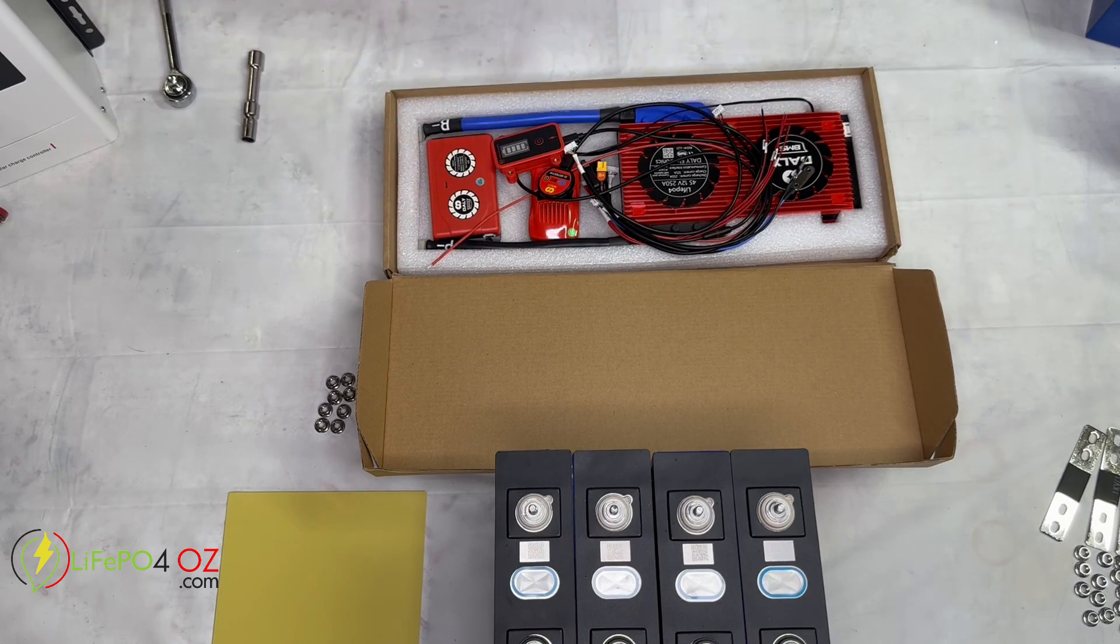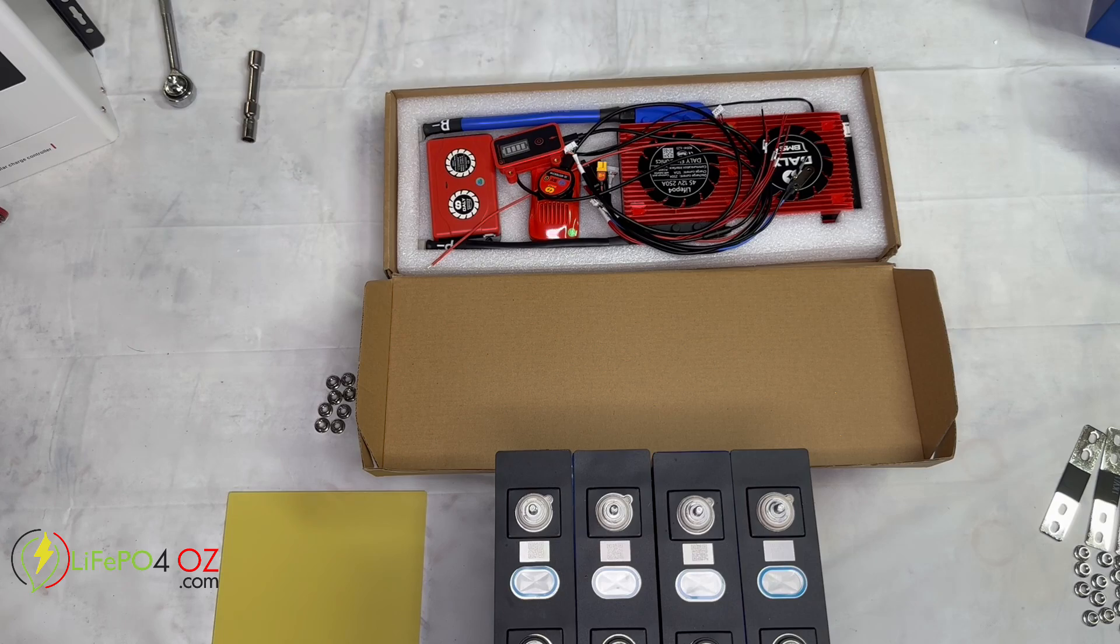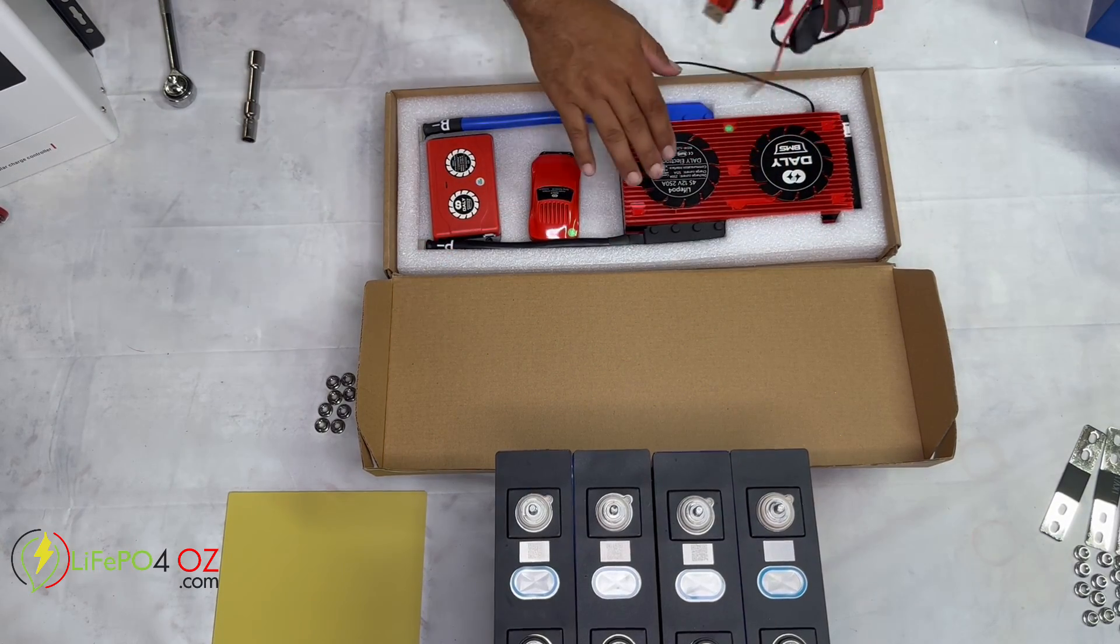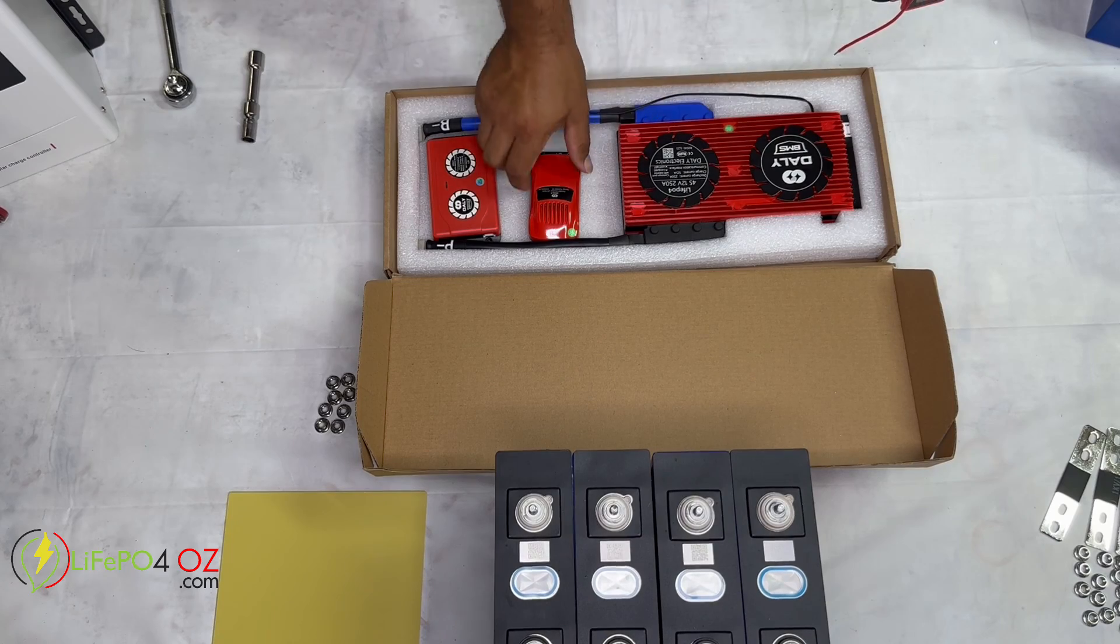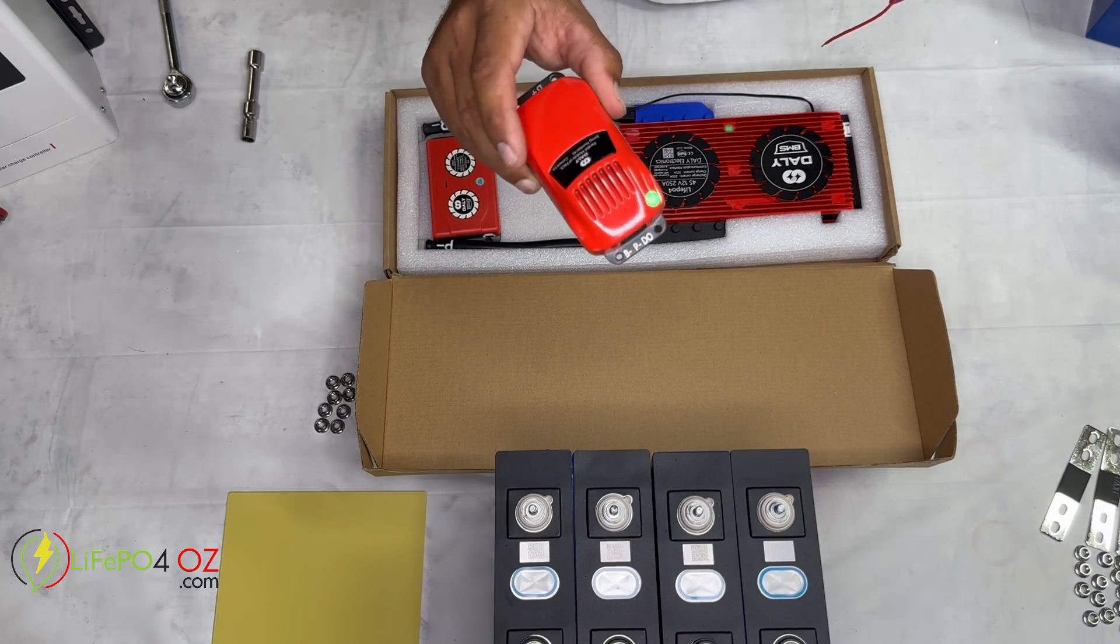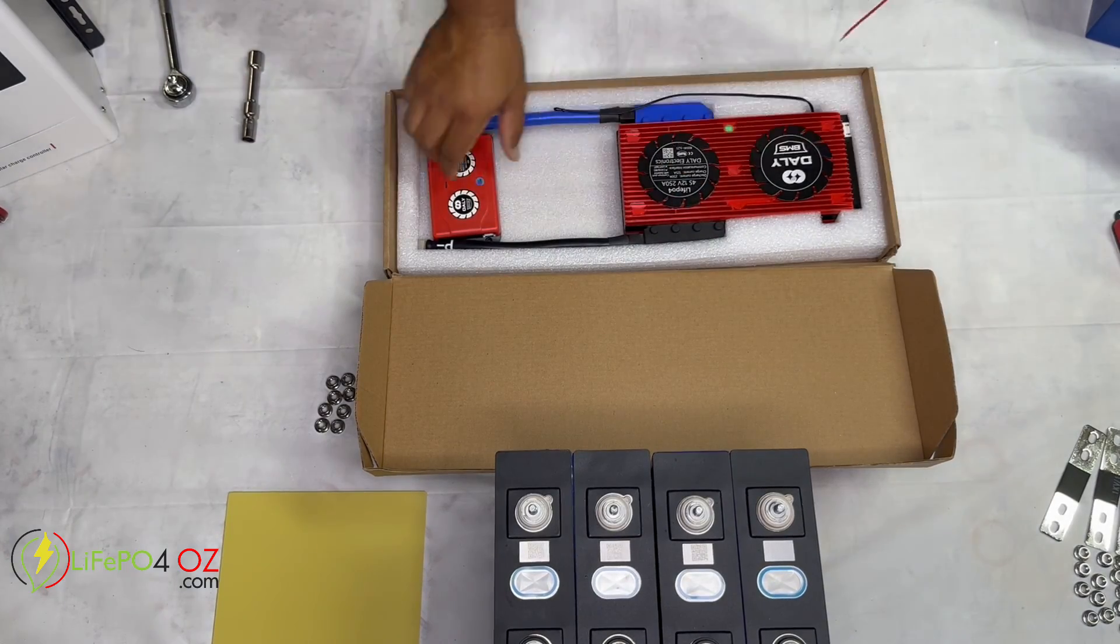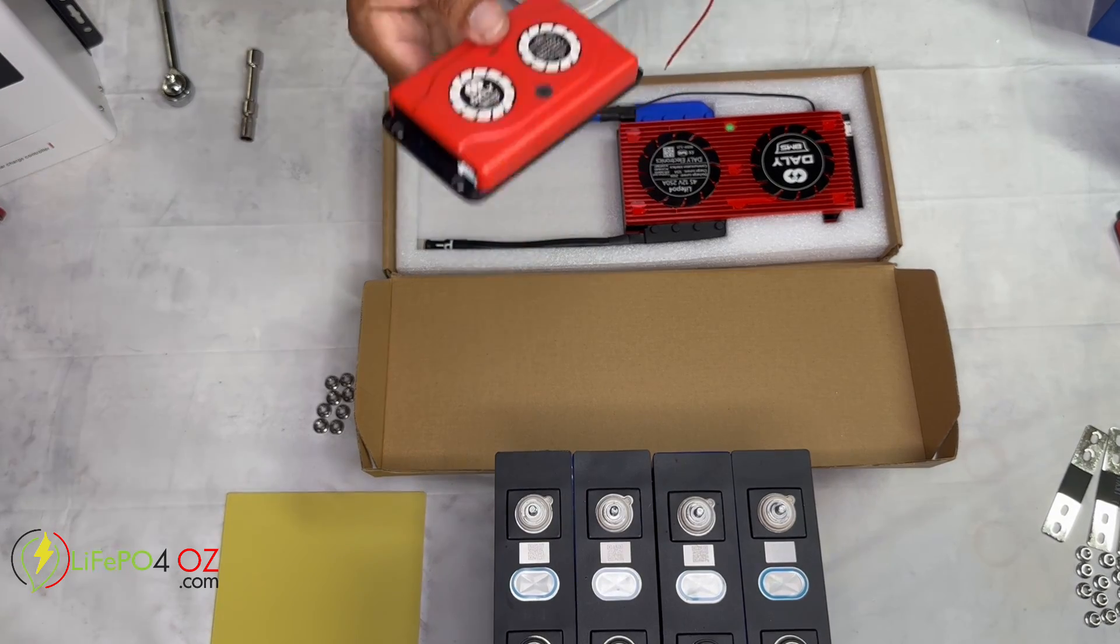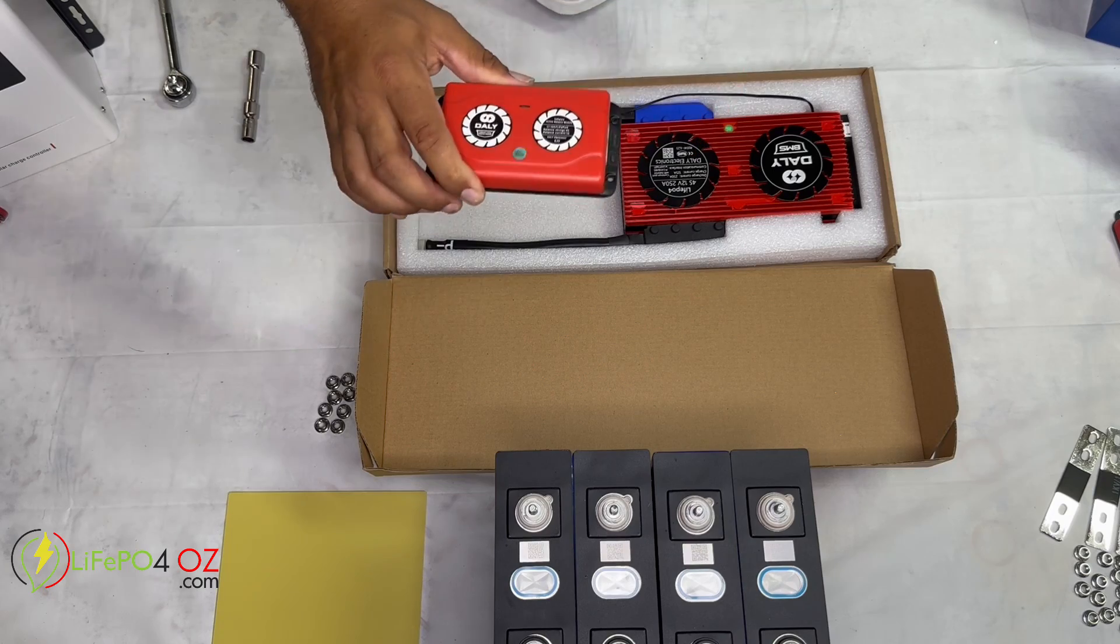Now when you open up the BMS box, inside the box you'll have your BMS. If you've purchased it you'll have your parallel module and again if you've purchased it, we highly recommend you get your active balancer. So this is the Daly one amp active balancer.